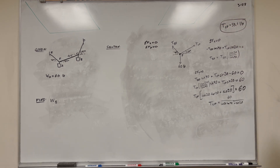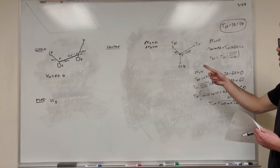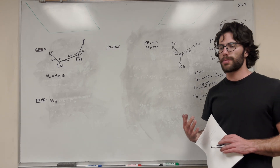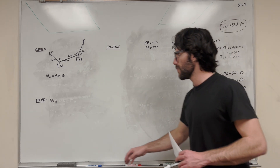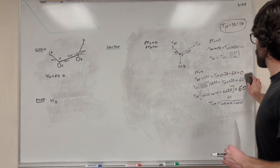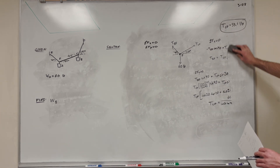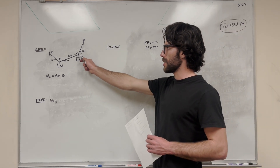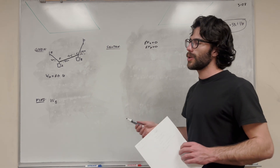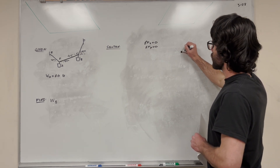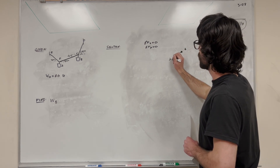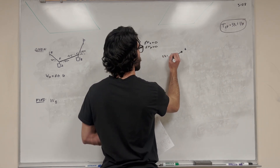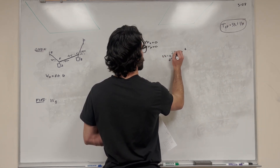That's the first thing we solved for. Now we could solve tension EF by substituting back, but it's not important for this problem, so we'll move on to our second free body diagram. Now we're looking at point C. Since we know tension CF, we have two unknowns and two equations to work with. Tension CF is 53.1 pounds at a 20-degree angle.